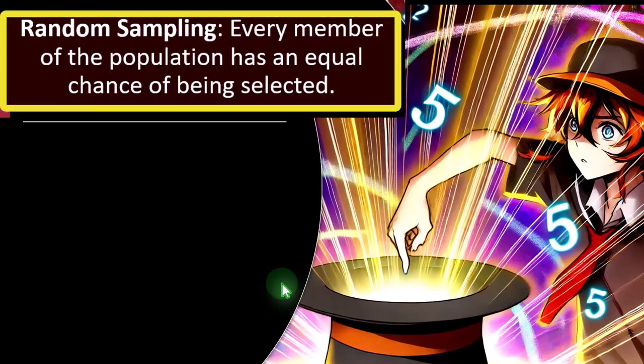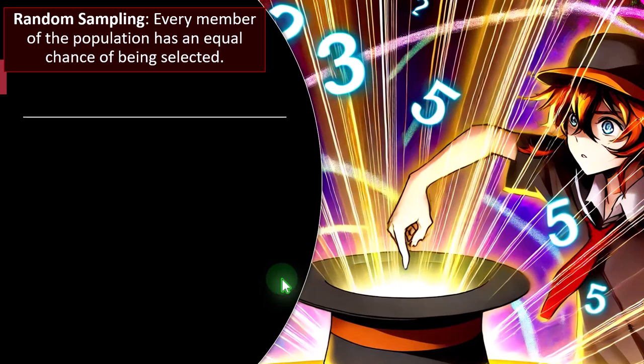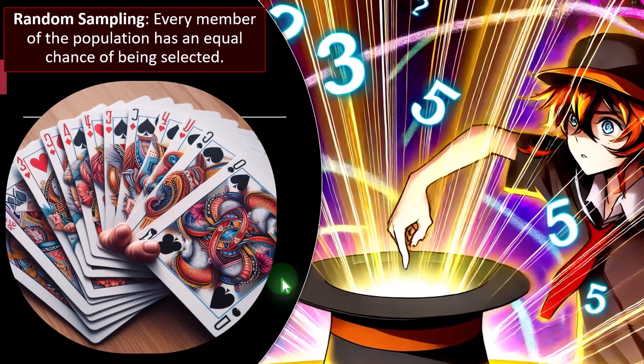The key term to keep in mind whenever we look at a sample is randomness. Whatever sampling method we use, there will typically always be some randomness. If there's no randomness, we'll suspect there's bias being introduced. Random sampling means every member of the population has an equal chance of being selected. Think of putting all numbers in a hat and shuffling well — all numbers have an equal chance of being drawn. The same goes for random number generation in Excel or shuffling a deck of cards.